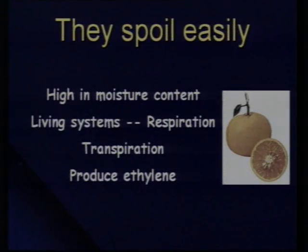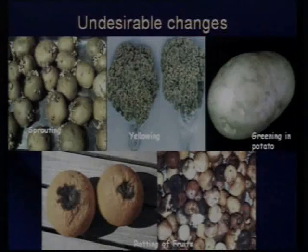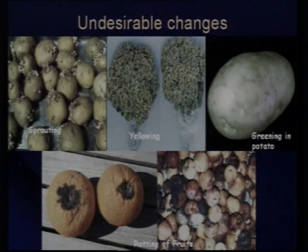We can control the spoilage of fruits and vegetables by storing them at low temperature. When we store them at low temperature or under any structures which maintain low temperature, there are two most important things to keep in mind: the temperature of the storage and the humidity. If we can maintain proper temperature and proper humidity conditions in the storage structures, we can extend the shelf life. Our main objective is to extend the shelf life and to prevent spoilage. This is what you will learn in these chapters.